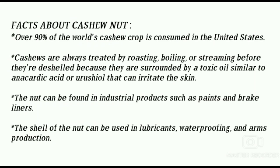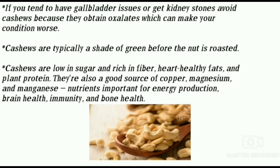Facts about cashew nut: over 90% of the world's cashew crop is consumed in the United States. Cashews are always treated by roasting, boiling, or steaming before they are deshelled because they are surrounded by a toxic oil — anacardic acid — that can irritate the skin. The nut can be found in industrial products such as paints and brake liners. The shell of the nut can be used in lubricants, waterproofing, and arms production. If you tend to have gallbladder issues or kidney stones, avoid cashew because they contain oxalates which can make your condition worse.